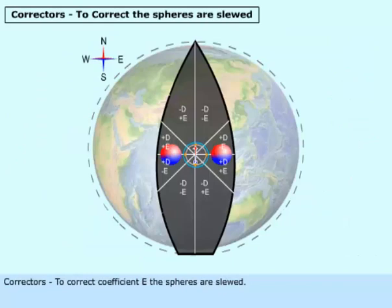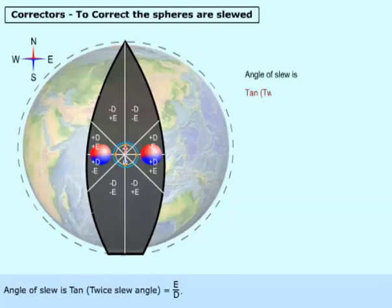Correctors: To correct coefficient E, the spheres are slewed. The angle of slew is calculated where tangent of twice the slew angle equals E over D.